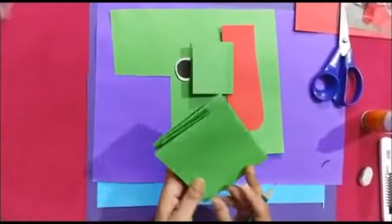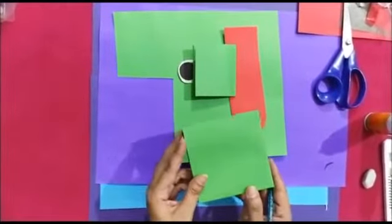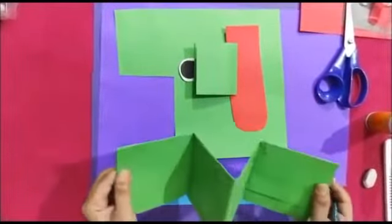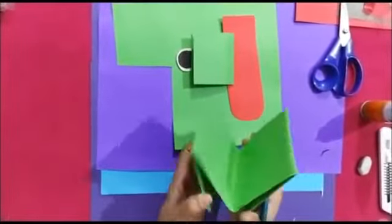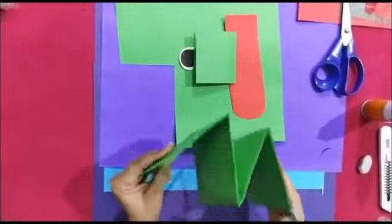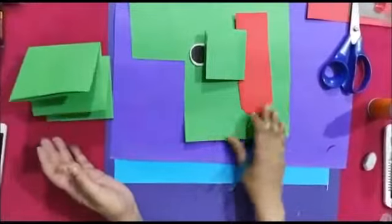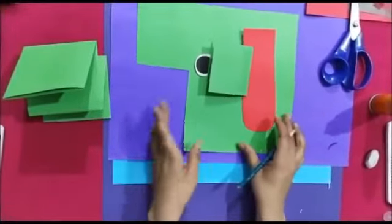Now we are making another one, and that is a frog. Take a green sheet and fold it the same way. After this, we are making eyes and tongue for this.